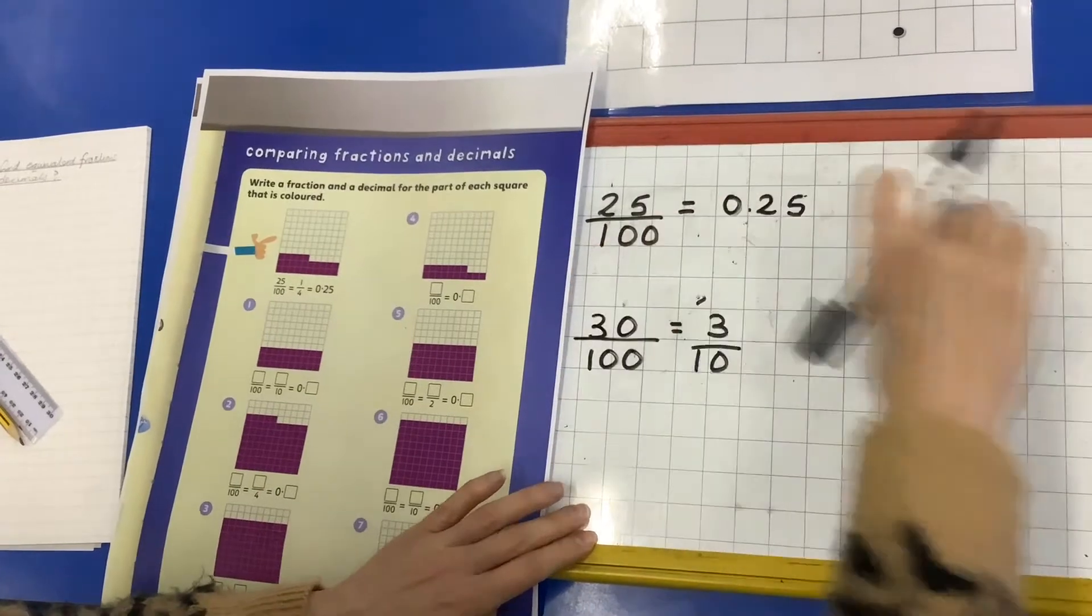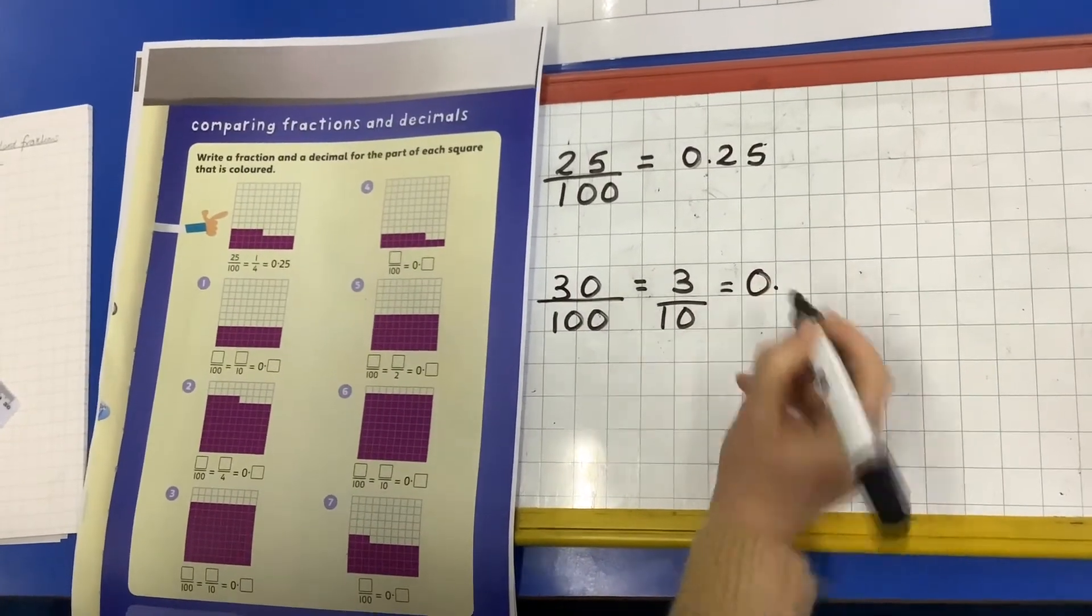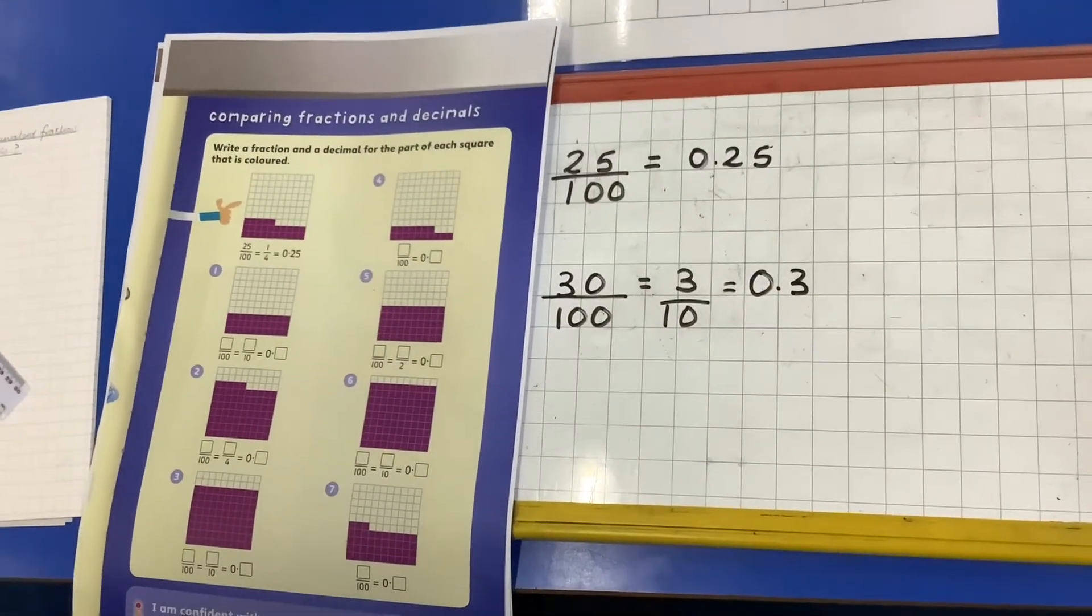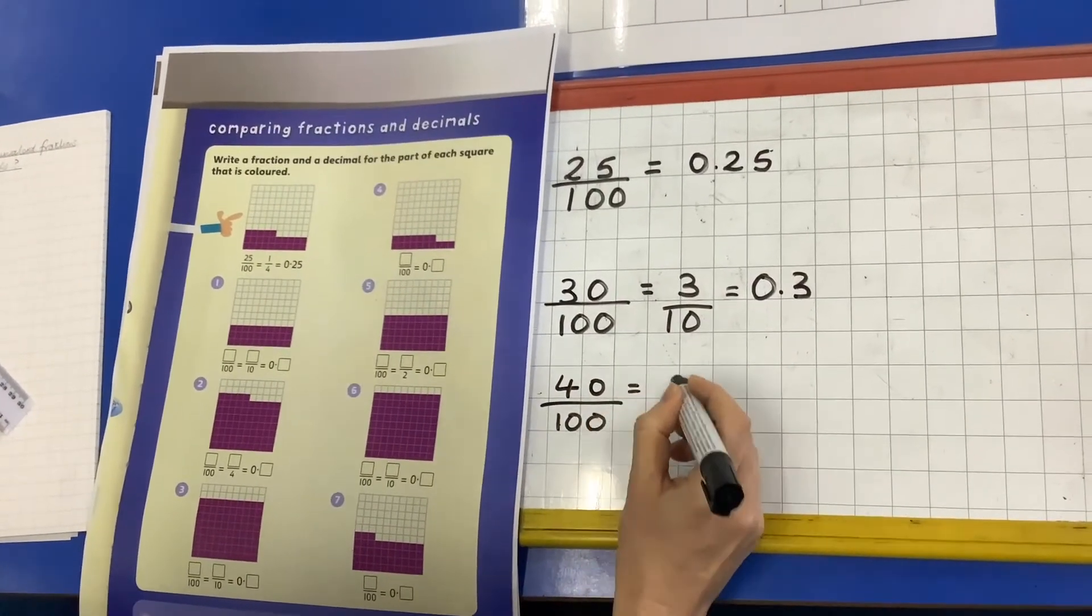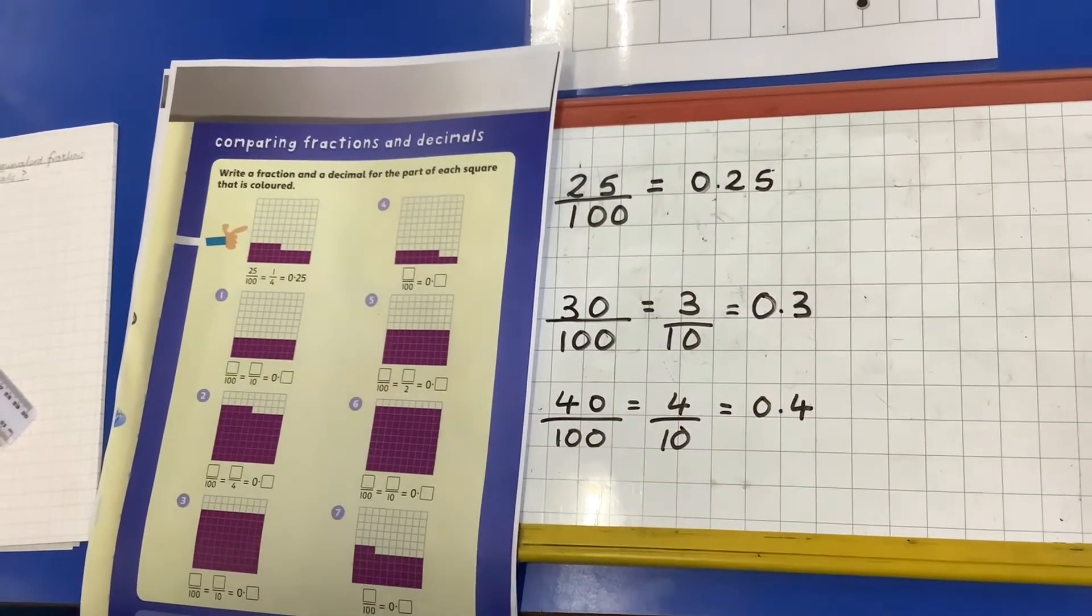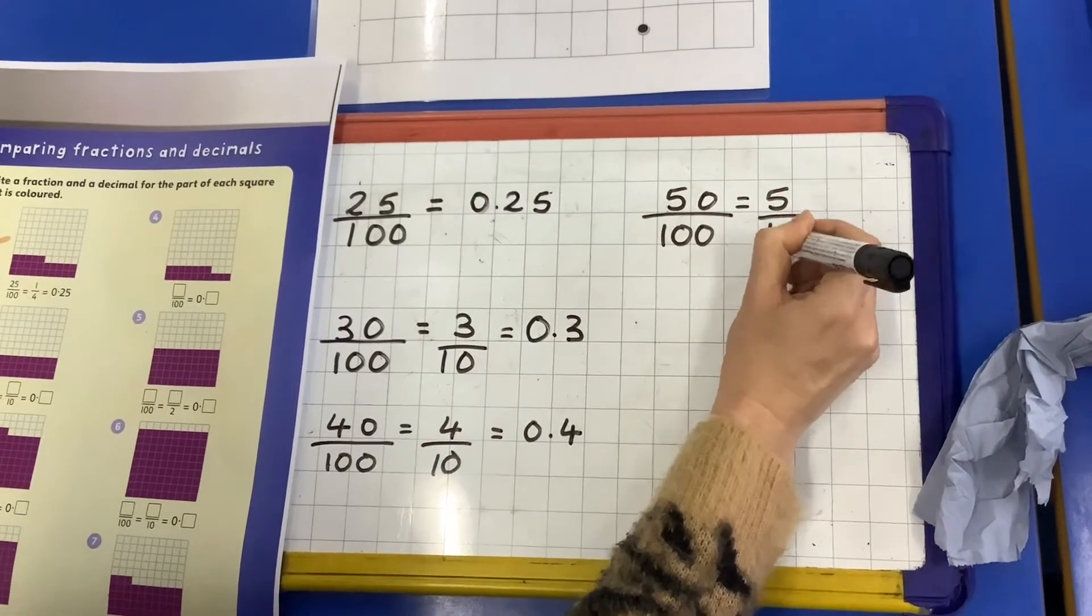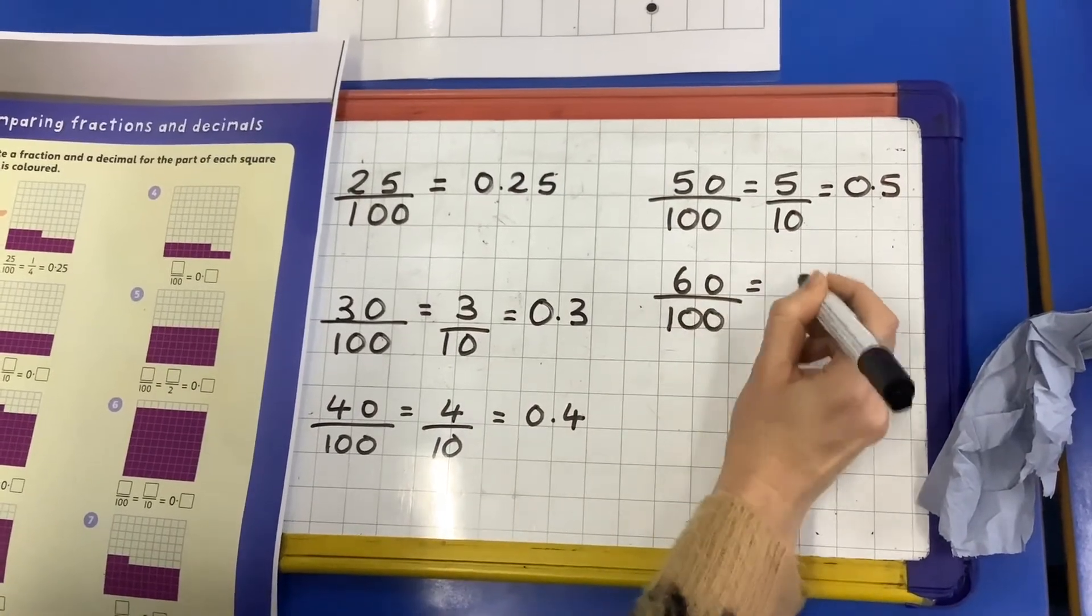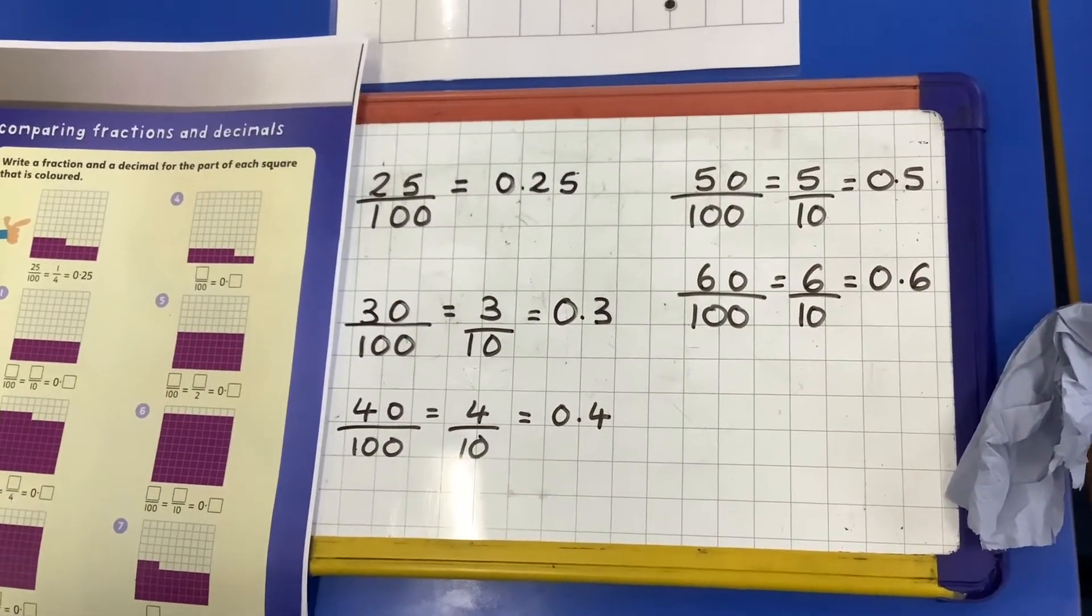Now the difficult part, can we write this as a decimal? Well, how many tenths do we actually have for our tenths place here? It's just 0.3. If you were to go through and do the same for some others, I wonder if you could see a pattern? Look, there's a bit of a pattern forming here. So actually when you've got tenths, it should be relatively easy for you to change them into decimals.